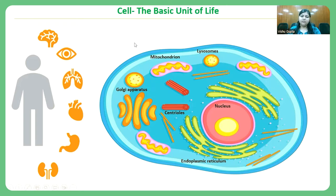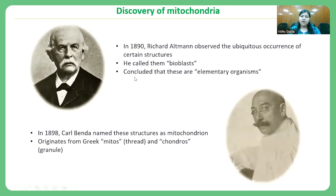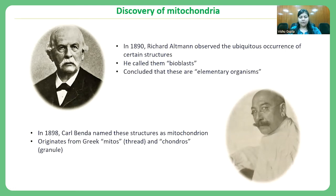If we look back at the discovery of mitochondria, long back around 100 years ago in the 1890s, Richard Altmann observed the ubiquitous occurrence of these structures and named them bioblasts. He also concluded that these organelles could be elementary organisms. Later, in 1898, Karl Benda gave the name mitochondrion to these organelles, based on the appearance of these structures inside the cell.